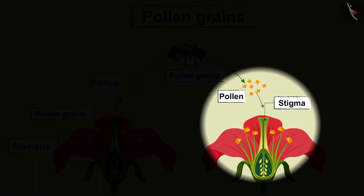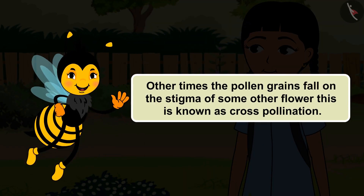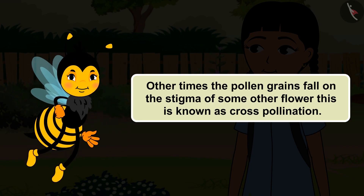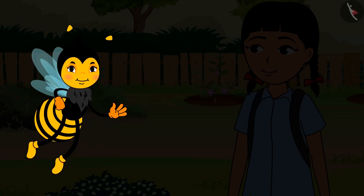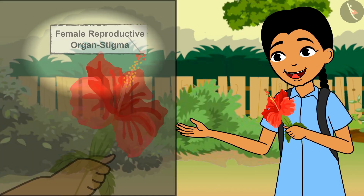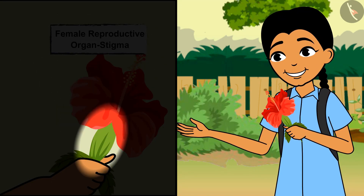This is known as cross-pollination. Look at this flower. This is the stigma. Look, there is a bud-like structure here.